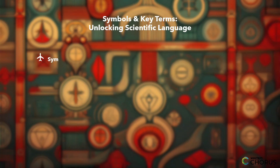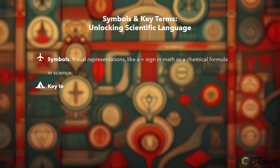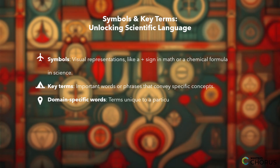Symbols are visual representations, like a plus sign in math or a chemical formula in science. Key terms are important words or phrases that convey specific concepts. Domain-specific words are terms unique to a particular field, such as biology or engineering.